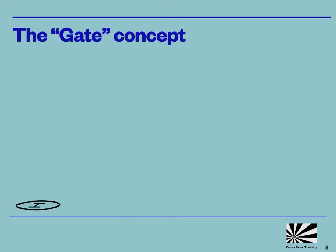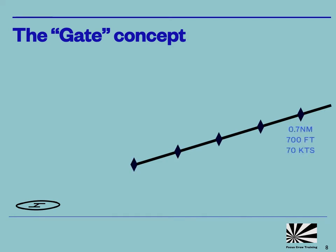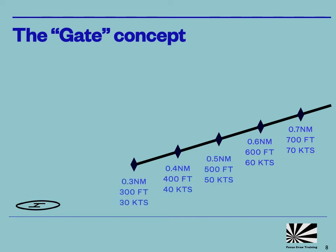One way to help us to achieve a steady deceleration and descent and stabilize the approach is to use a concept of notional gates. The gates are a series of points at decreasing range to the landing surface during our approach, and at each point we have target parameters to achieve of airspeed and height. The example shown here is purely to illustrate the concept and doesn't necessarily show the procedure for any particular helicopter. If we can pass through each gate at or close to the given parameters, then it will naturally channel the helicopter to arrive at the landing decision point in a suitable state to allow it to continue for a safe landing.